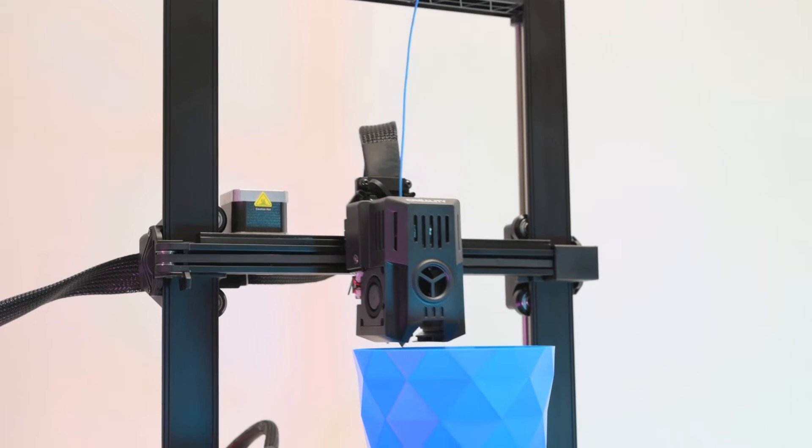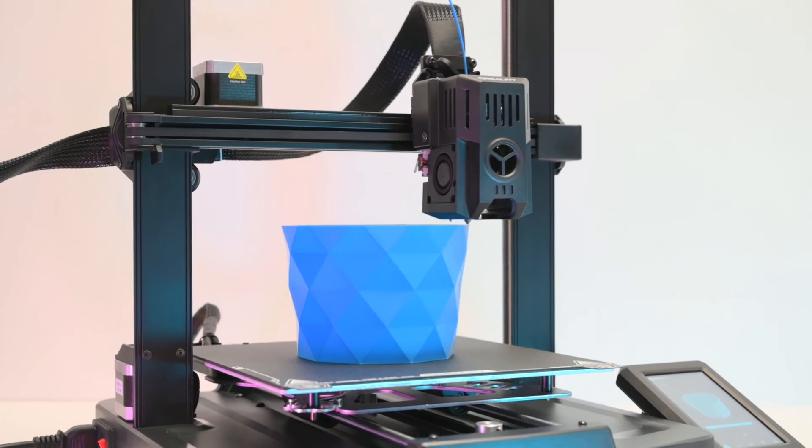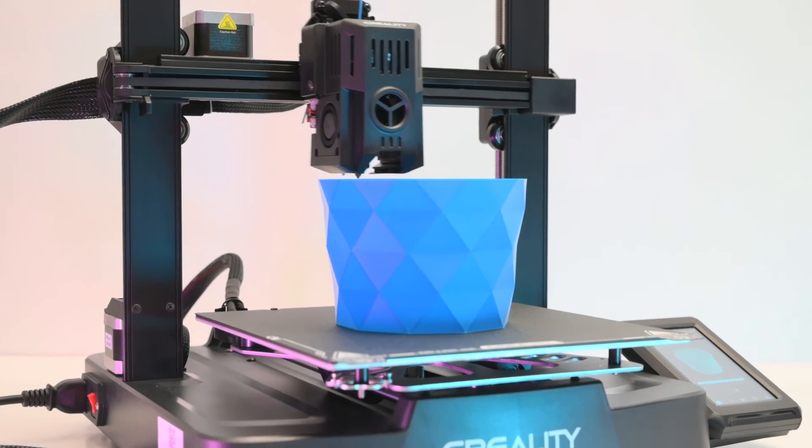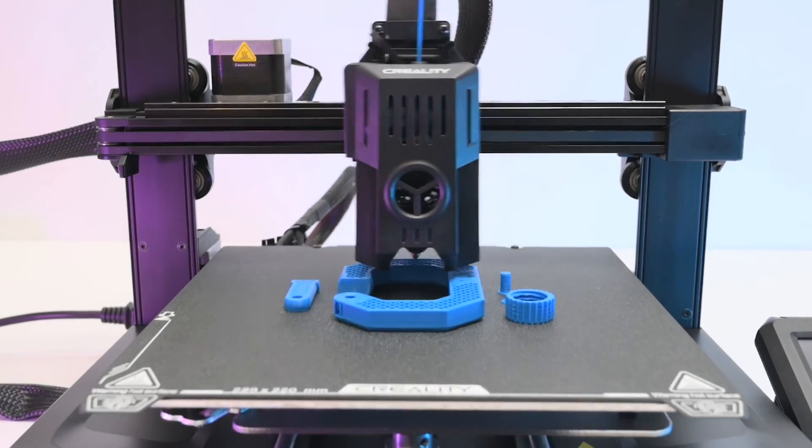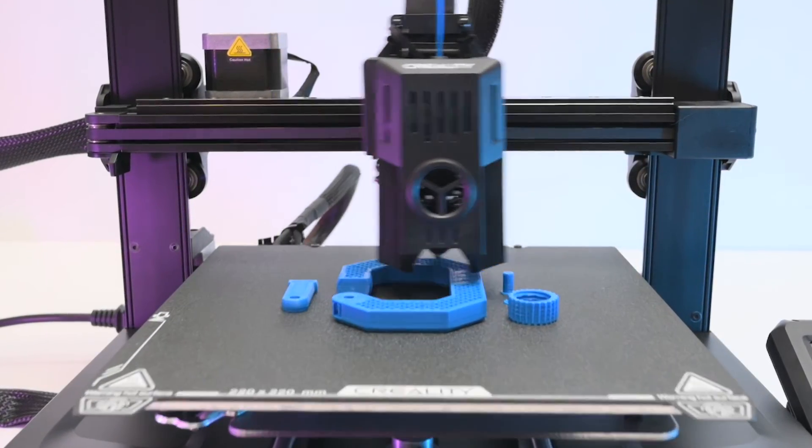For printing we have a build volume of 220x220x240mm which is enough for most basic models. The printer has print speeds of up to 500mm a second with 300mm set as the default printing speed in the software.